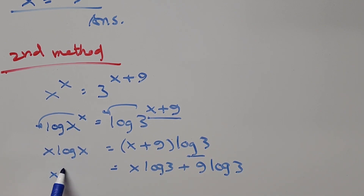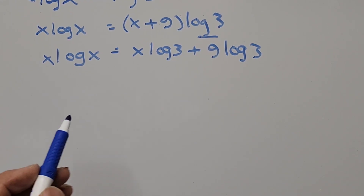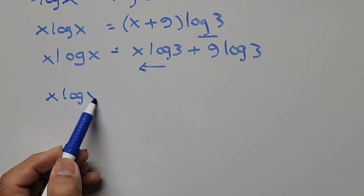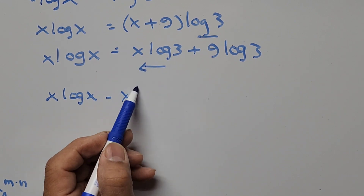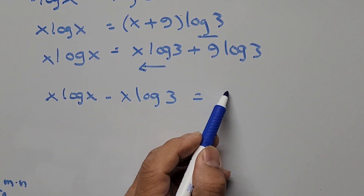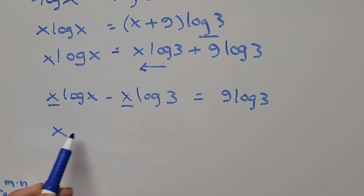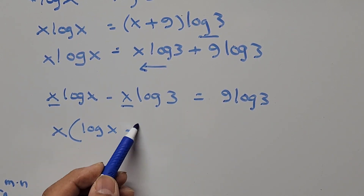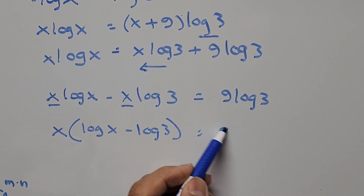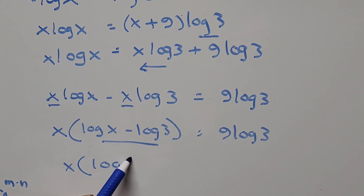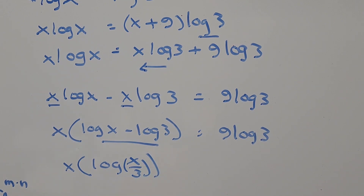The left-hand side remains x log x. Moving x log 3 to the left side gives x log x minus x log 3 equals 9 log 3. Factoring out x on the left-hand side, we get x times the quantity (log x minus log 3) equals 9 log 3. Using the quotient rule of logarithm, log x minus log 3 equals log of (x divided by 3).